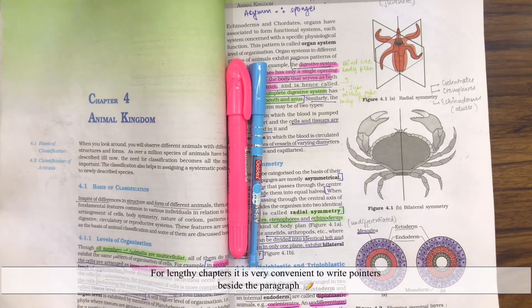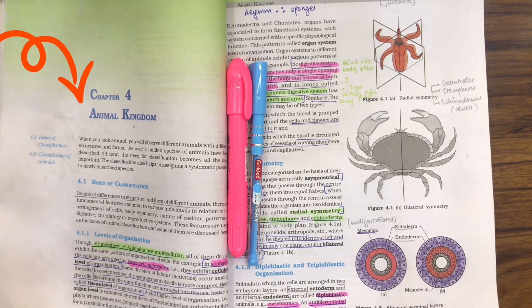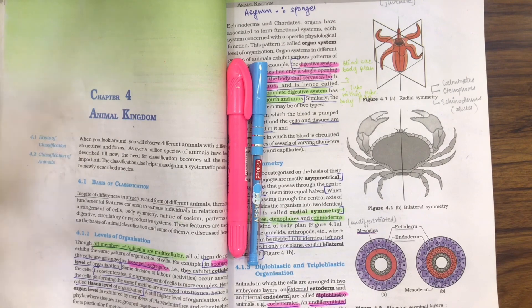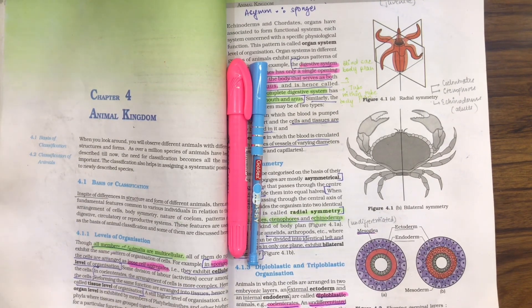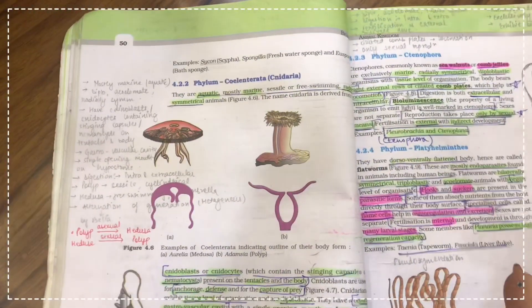For an example, I am taking the chapter Animal Kingdom as it is one of the biggest chapters and there are a lot of examples and properties that we need to memorize. So, let us move on to the phylum part as it is the most important part in this chapter.